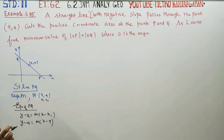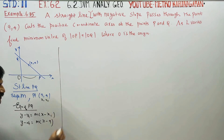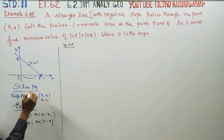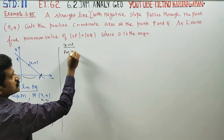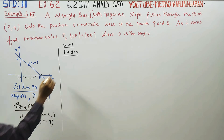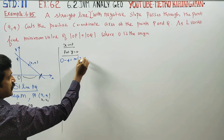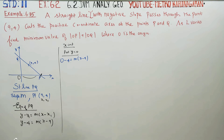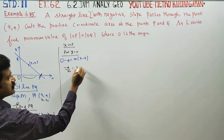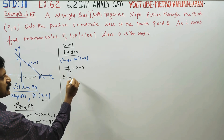This is the equation of PQ — the equation is ready. Now we find the x-intercept. If you want the x-intercept, put y equal to 0. With y = 0: 0 - 4 = m(x - 9), so -4/m = x - 9.